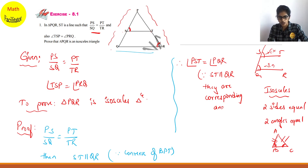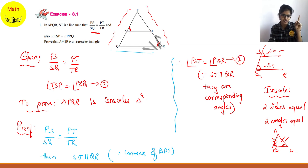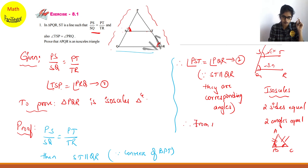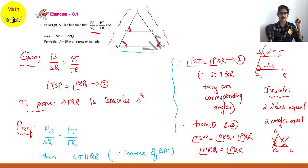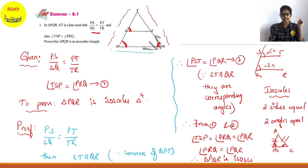This is equation 1 from the given condition, and this is equation 2 from corresponding angles. Note that angle TSP and angle PST refer to the same angle. So from equations 1 and 2, angle TSP = angle PRQ = angle PQR. Therefore angle PRQ equals angle PQR. Since two angles of triangle PQR are equal, therefore triangle PQR is an isosceles triangle.